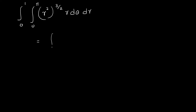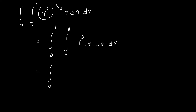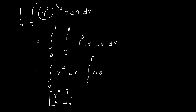That equals integral 0 to 1, integral 0 to pi, r cubed times r, d theta dr, which simplifies to integral 0 to 1 of r to the 4th dr, times integral 0 to pi d theta. Integrating gives r to the 5th by 5, evaluated from 0 to 1, which equals 1 by 5, multiplied by pi.